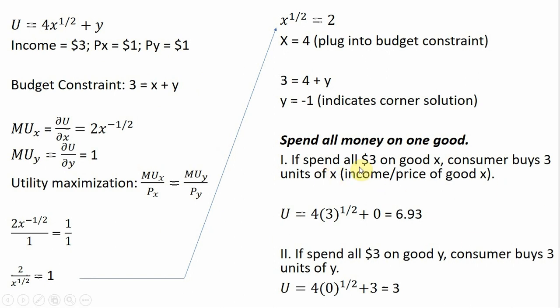If we spent all our $3 of income on good X, the consumer could afford 3 units of good X. All I did was take the income and divide it by the price of good X. Now I'm going to evaluate the utility function in the situation where we spend all our money on good X.